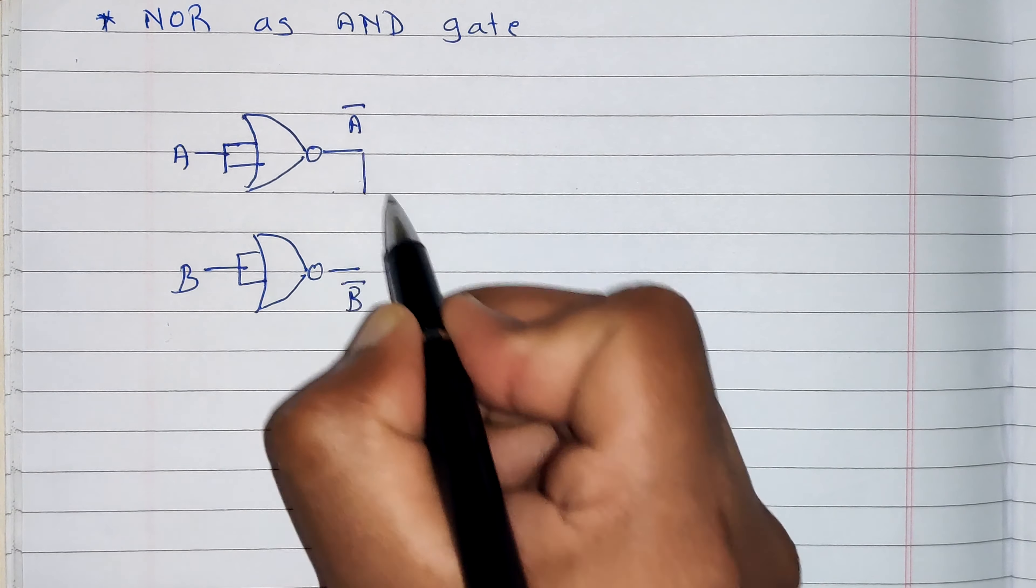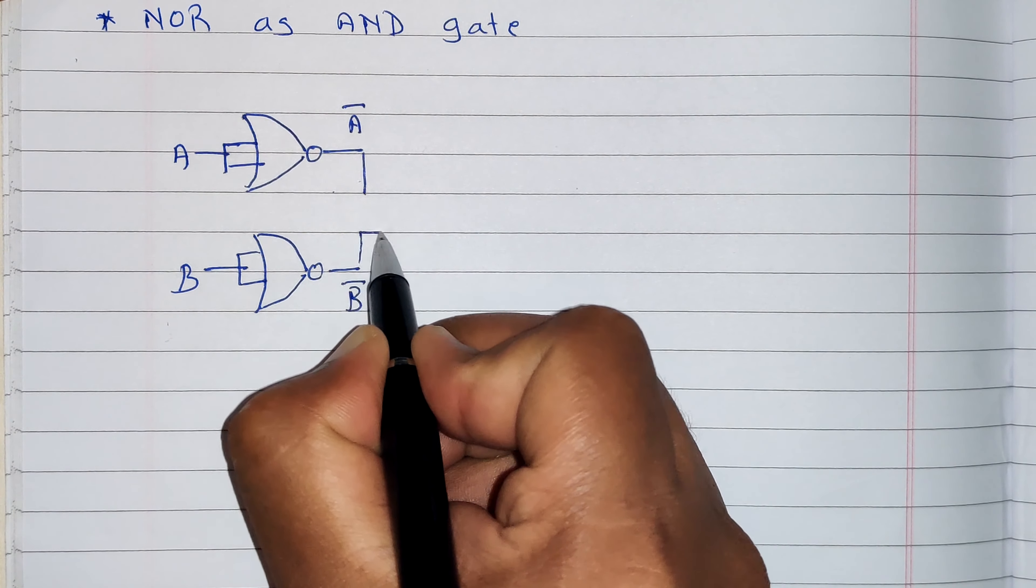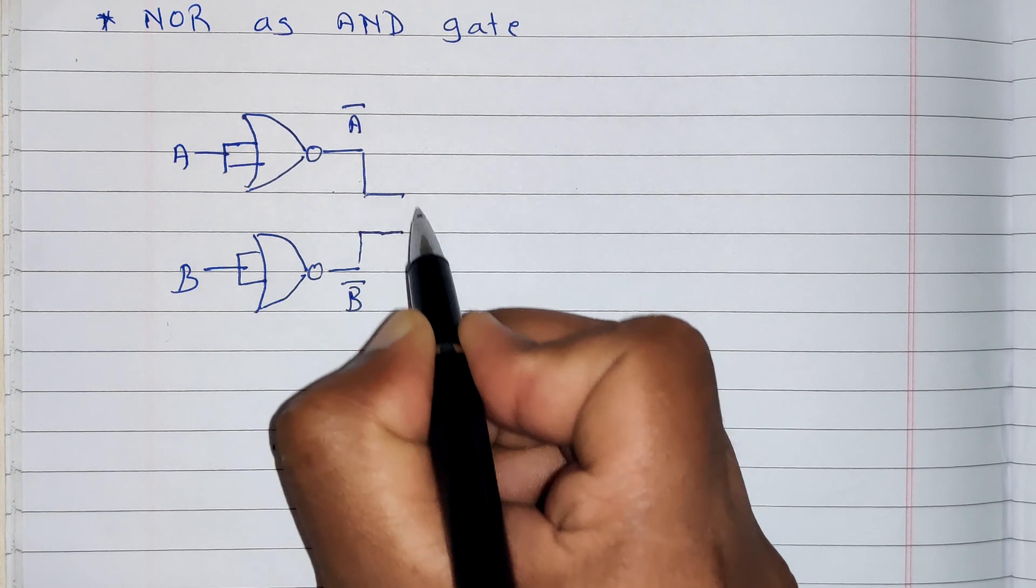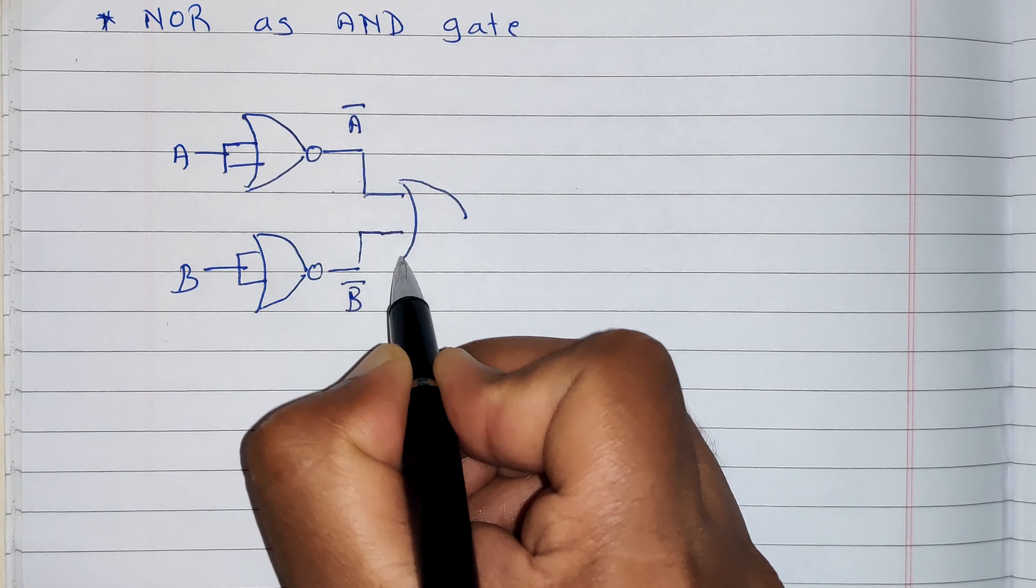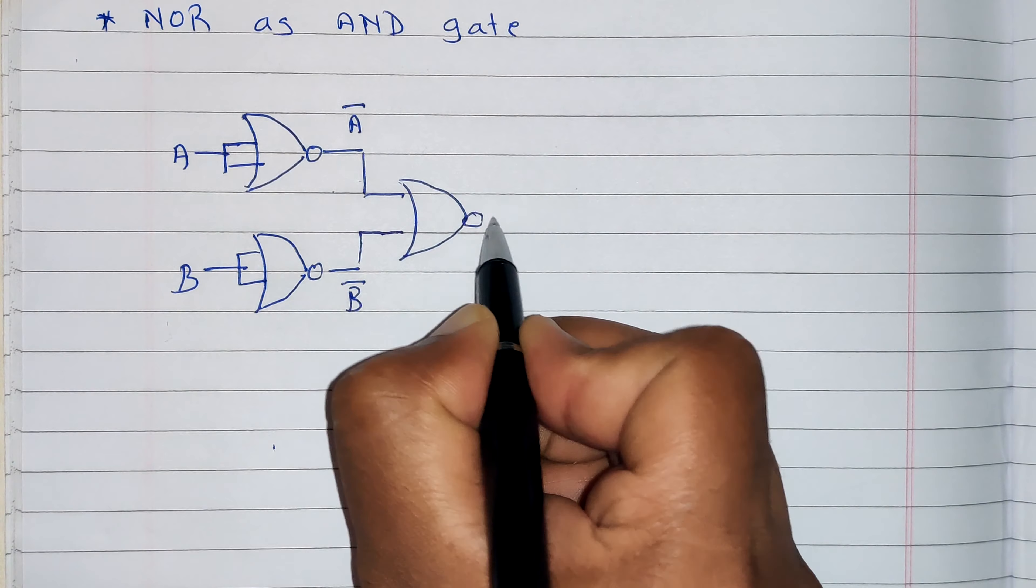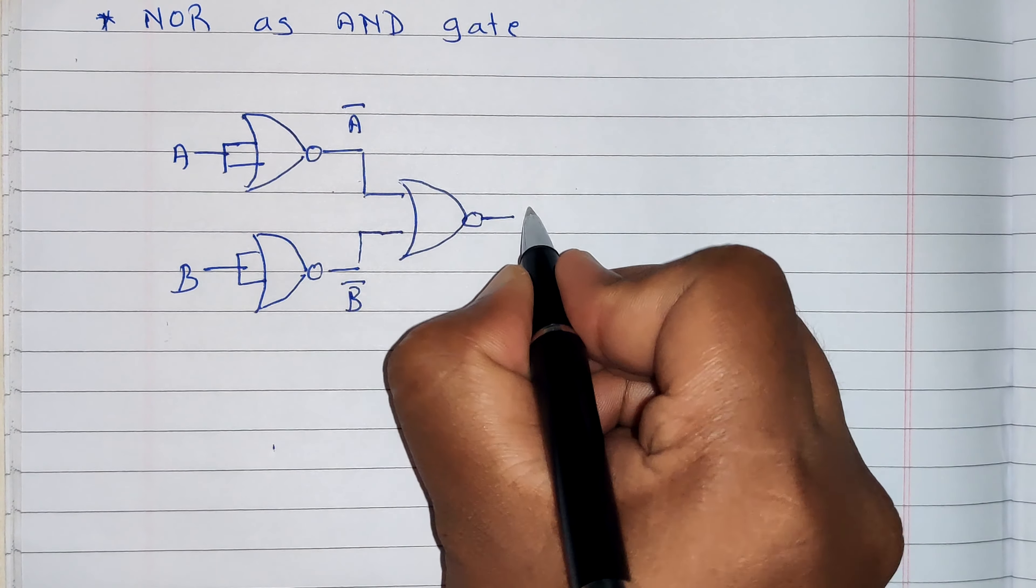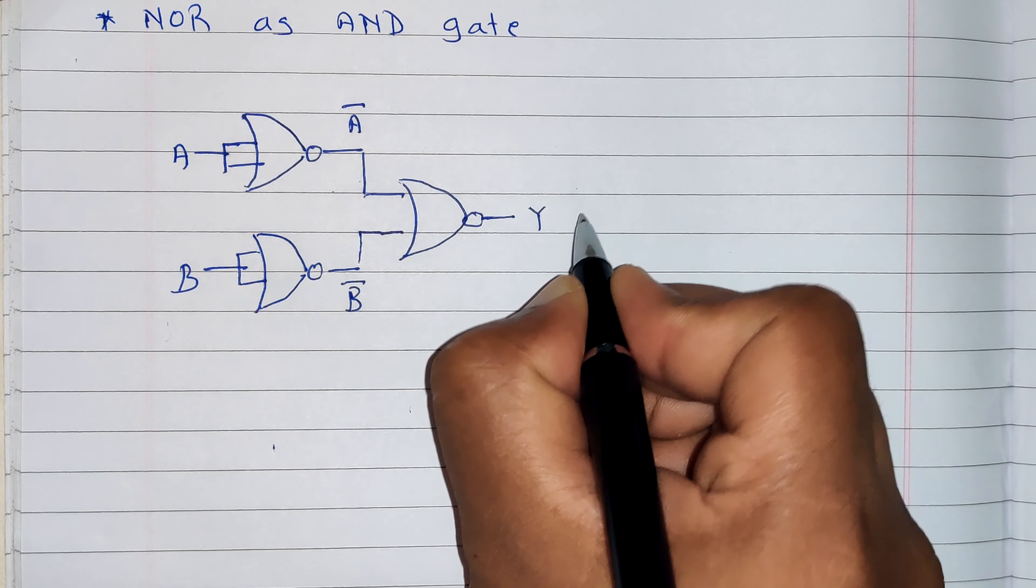Now we will join these two outputs as an input of the third NOR gate. Let's say output is Y.